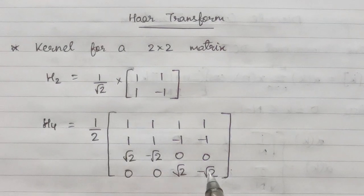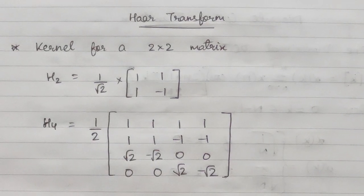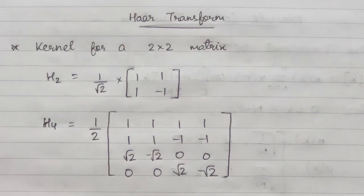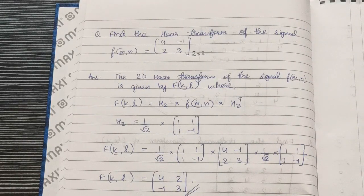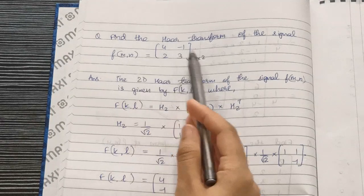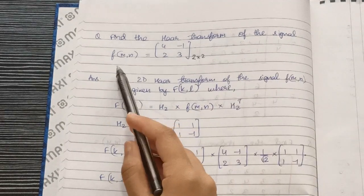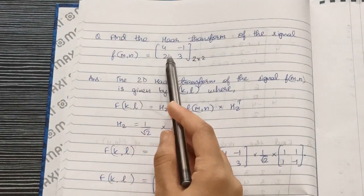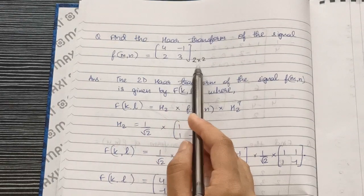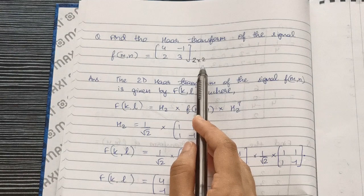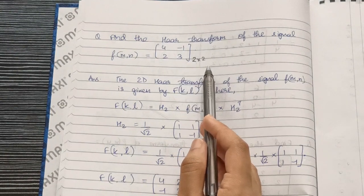Let's look at the questions now. We have a question here: Find the Haar Transform of the signal f(m,n) = [[4,-1],[2,3]]. This is a 2×2 matrix, which means our Haar basis should also be 2×2.